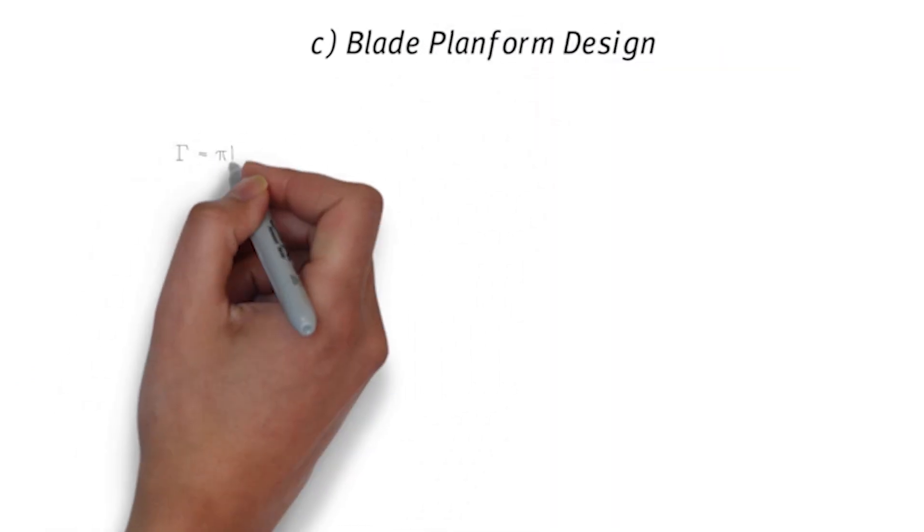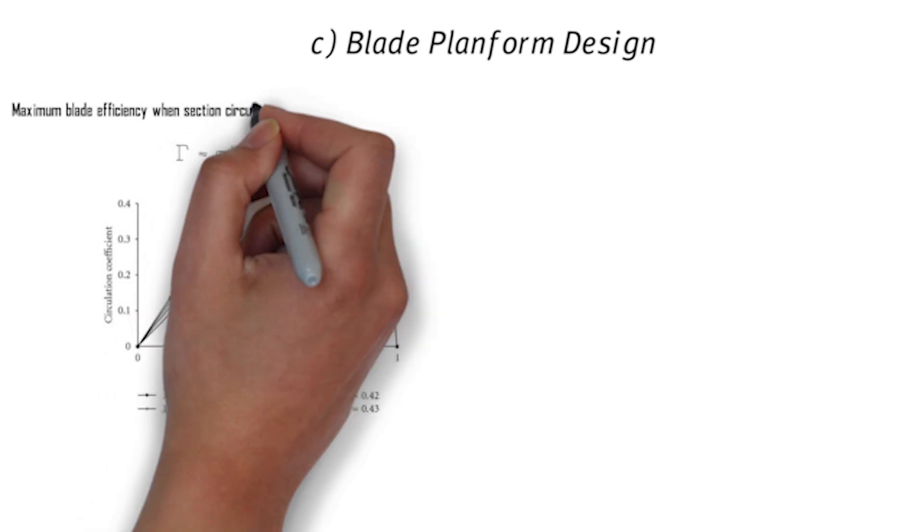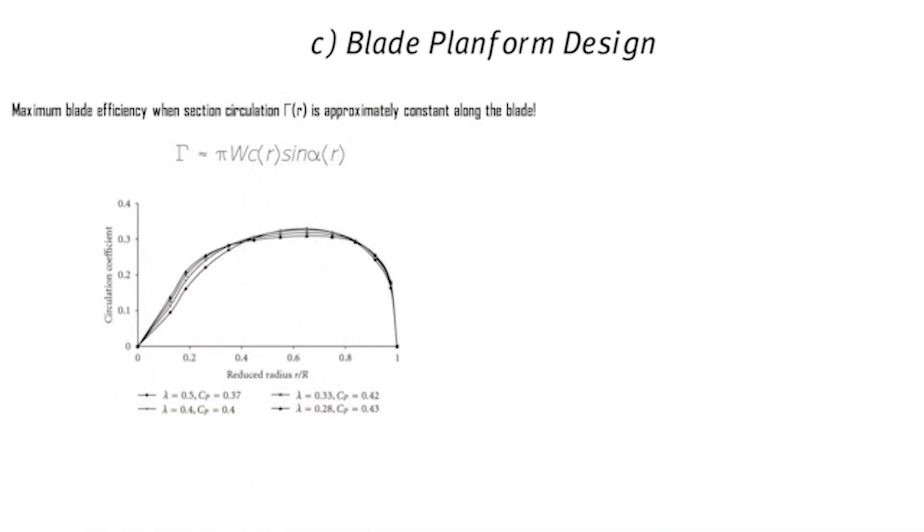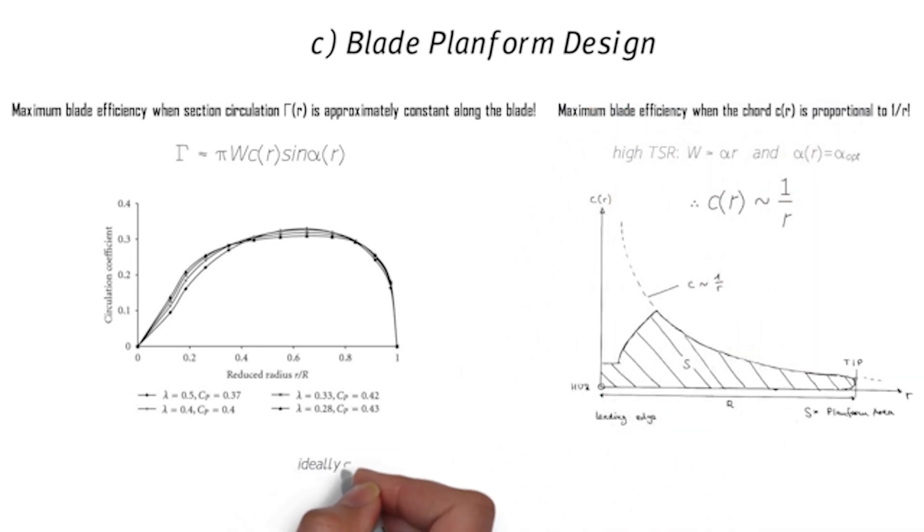For turbines, maximum blade efficiency is achieved when the circulation is approximately constant along the blade. Assuming high TSR and taking the optimum angle of attack, the cord length should be inversely proportional to the distance from the hub. Theory shows that for small turbines and low Reynolds number, maximum power is obtained if the product of solidity, lift curve slope and TSR is approximately 2 or slightly higher.